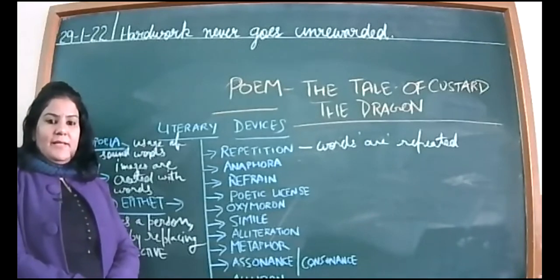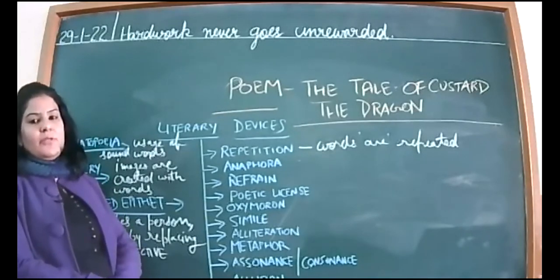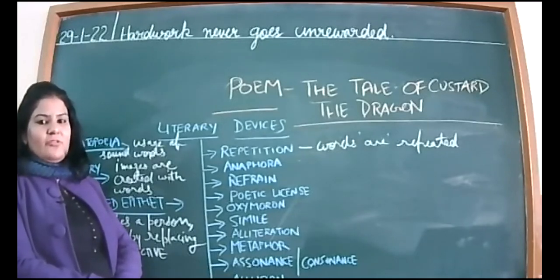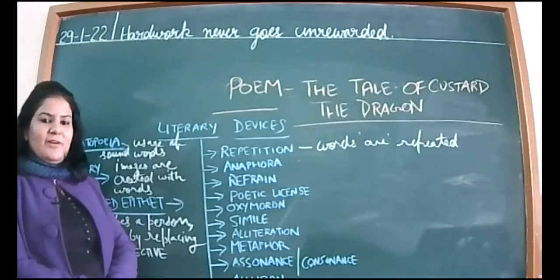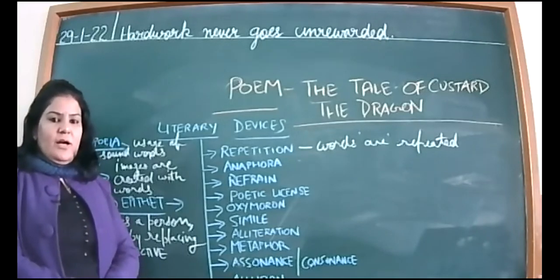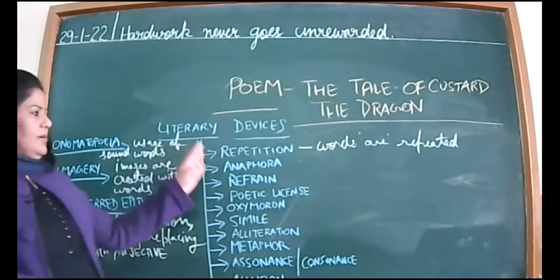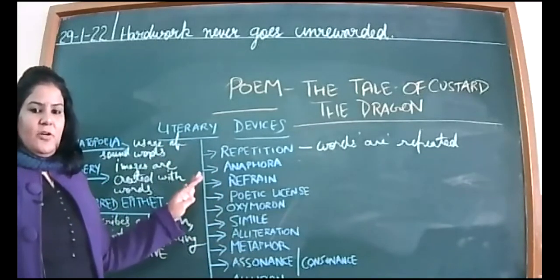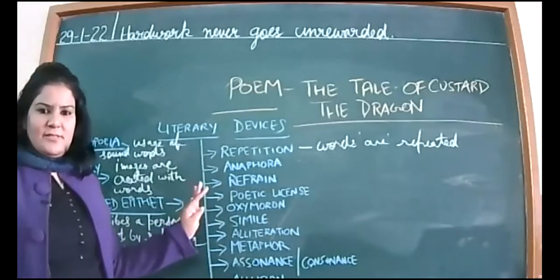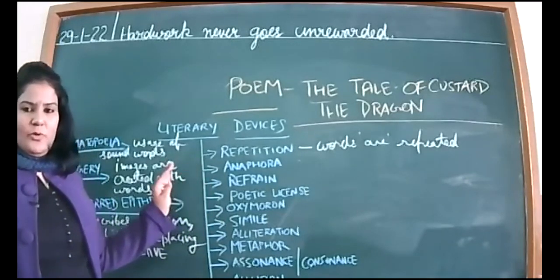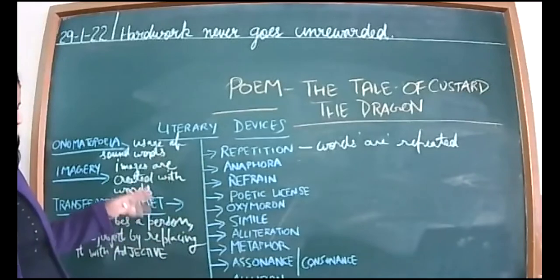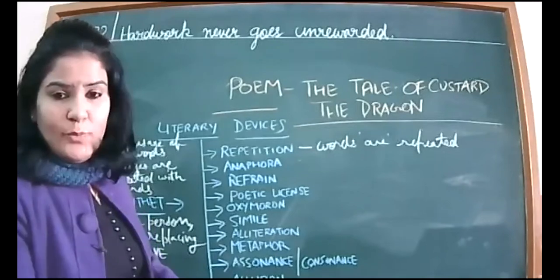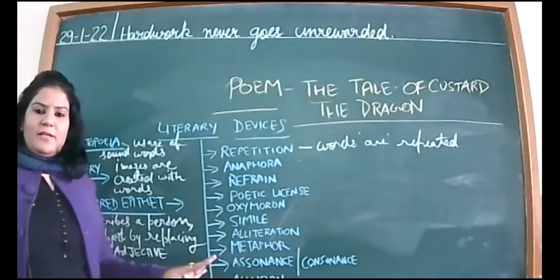In this ballad, they have used multiple poetic devices, multiple literary devices. If I use the word literary devices or poetic devices, they are one and the same thing. I will be discussing them and then you can see the meanings in detail. Then you will tell me in which stanza which poetic device is used.